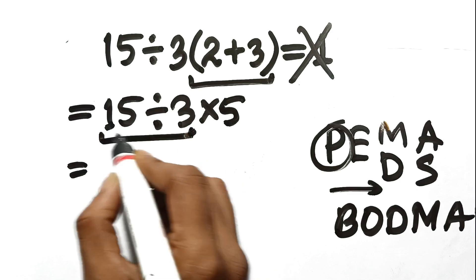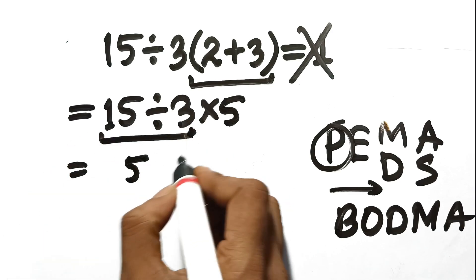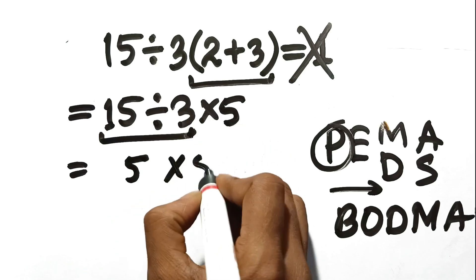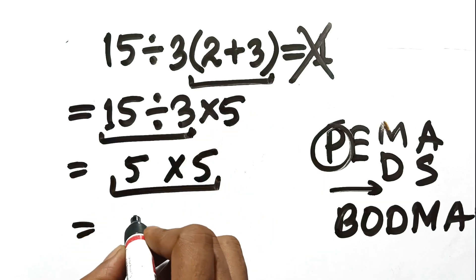The first operation is 15 divided by 3. That gives us 5. Now we take that result and multiply it by the remaining 5. So it's simply 5 times 5, which equals 25.